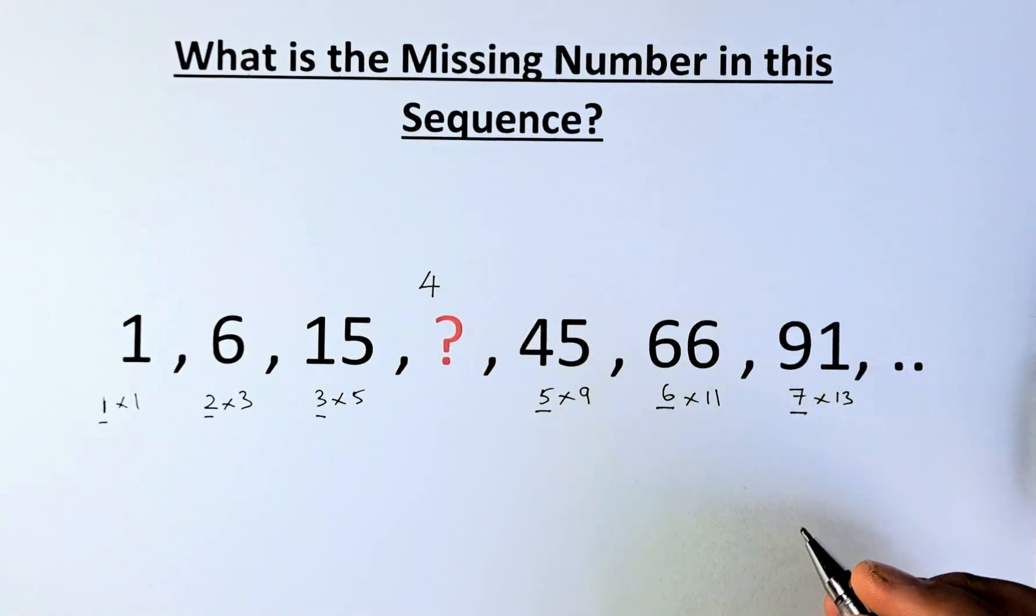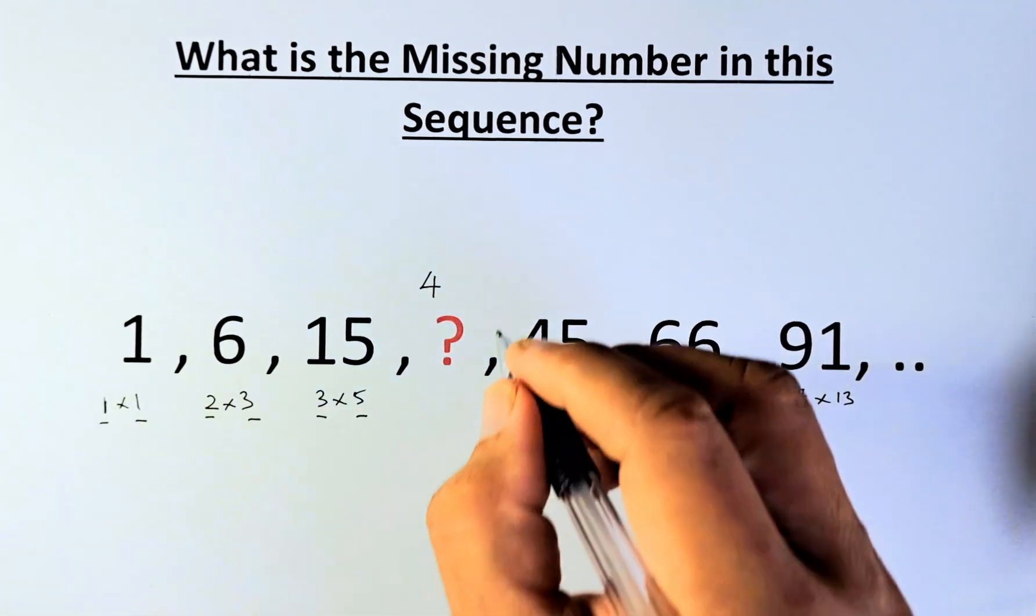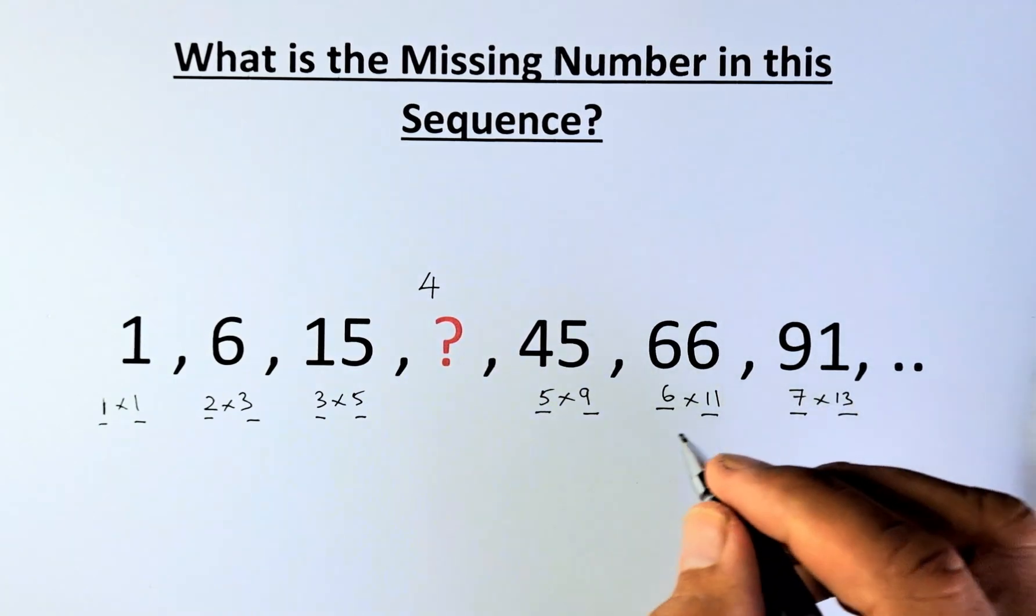Then 6, 7. And the second number is 1, 3, 5, 9, 11, 13.